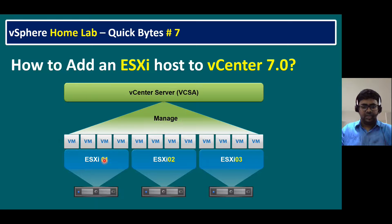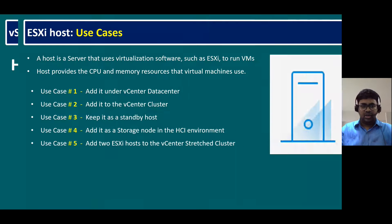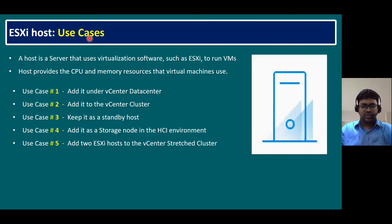In this diagram we have ESX1, ESX2, and ESX3. On top of the ESXi we can create multiple virtual machines. To manage multiple ESXi hosts we require a vCenter Server — we can call it the vCenter Server Appliance, or vCenter for short. Now I'm going to show you the vCenter use cases.